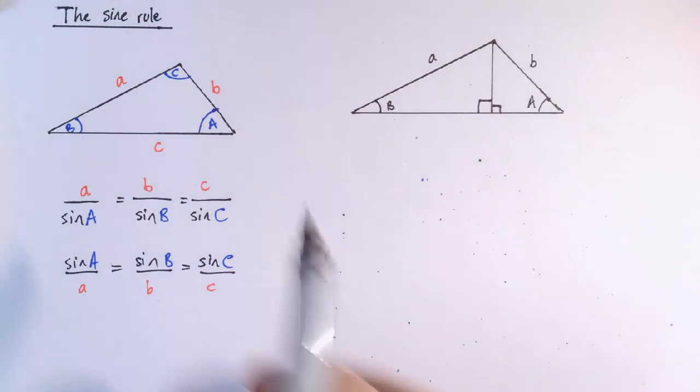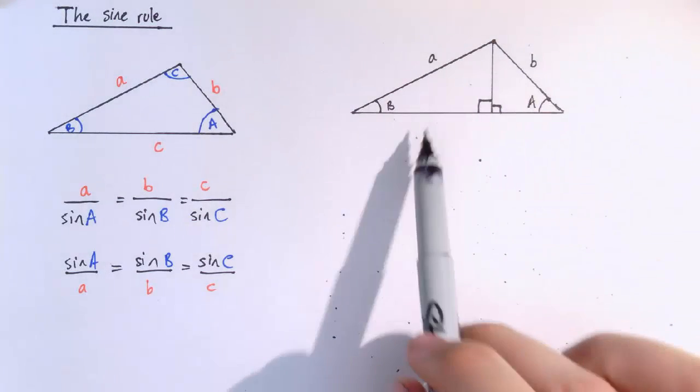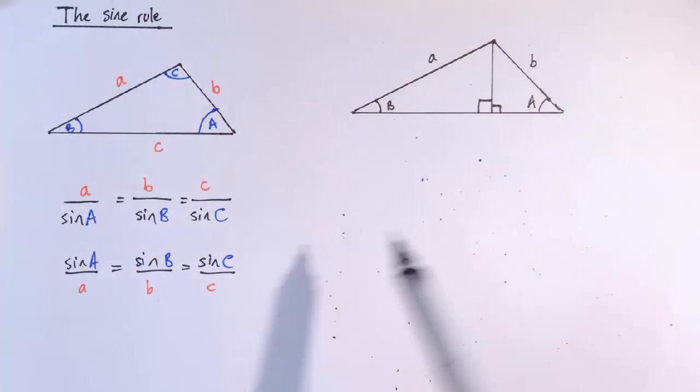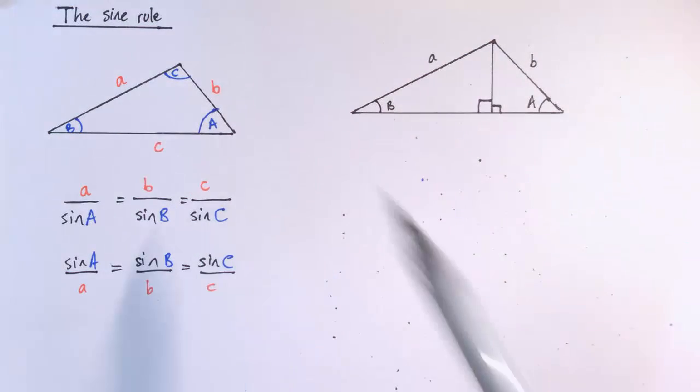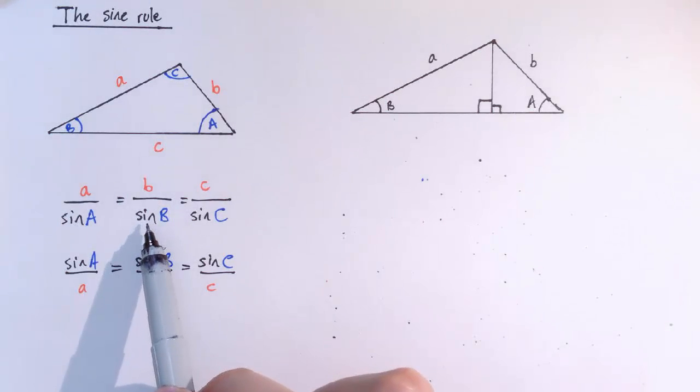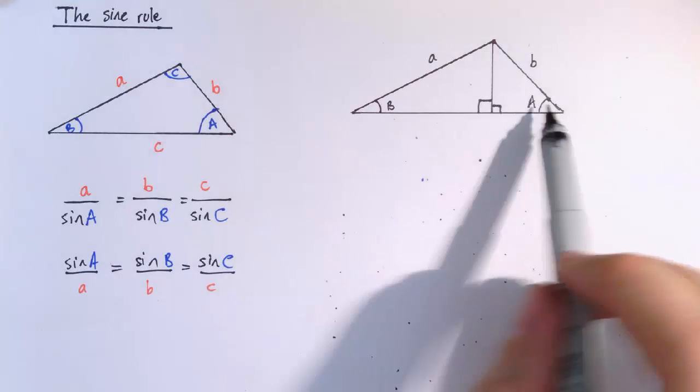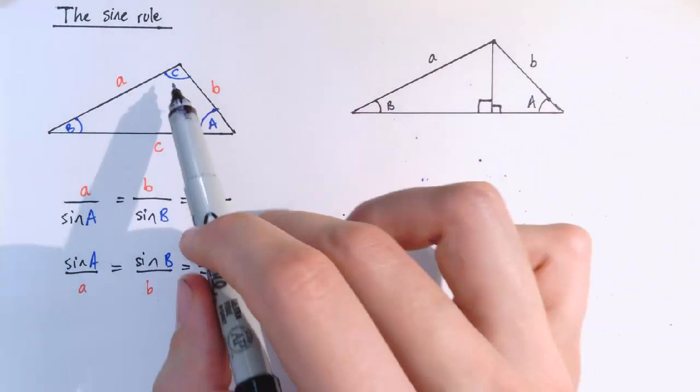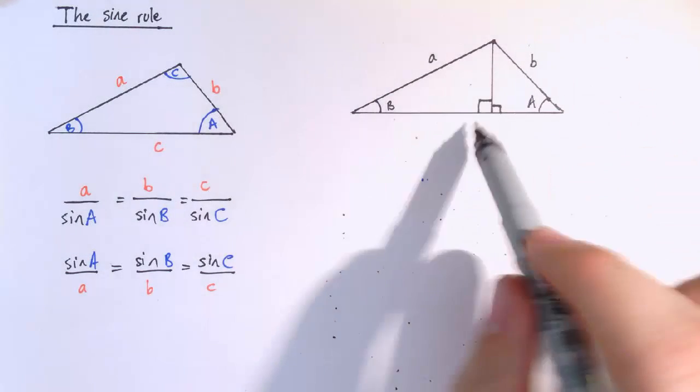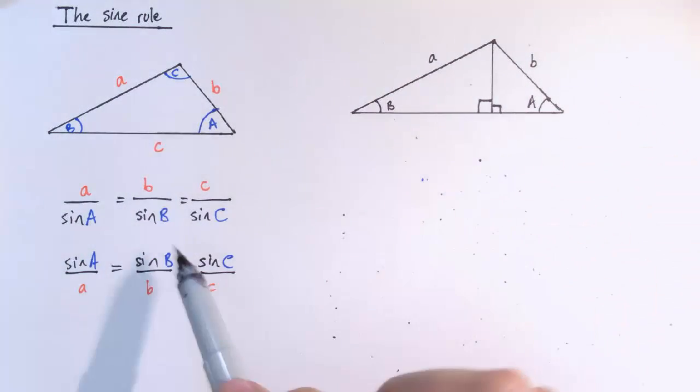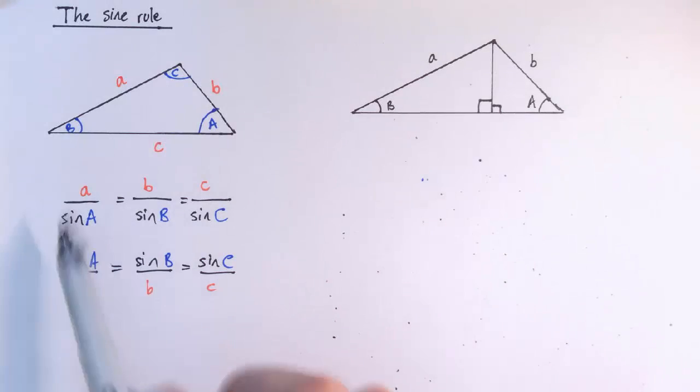So let's prove the sine rule as well then. And again, I'm just going to do it in this case of a triangle that looks a bit like this one. I'm just going to use a, b, a and b here. The reason being, if I can prove that a over sine a equals b over sine b, then there was nothing special about choosing these ones to be a and b. I could have chosen these ones to be a and b, or these ones to be a and b. So I could construct exactly the same sort of picture by changing the angles around. So it's just enough just to prove one part of this, and that will prove the whole thing.